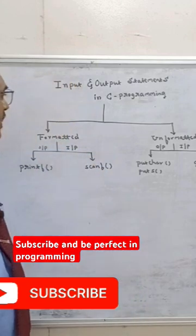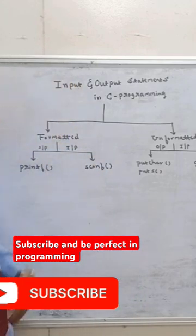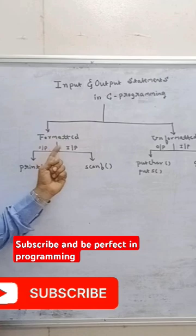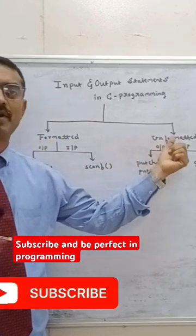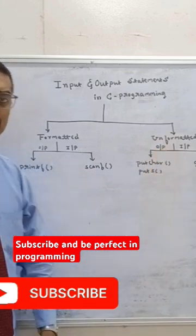Here I have drawn a simple hierarchy to understand this. In input and output statements, we majorly have two types: one is formatted input and output statements, another one is unformatted input and output statements. Let us start with the formatted input and output statements.